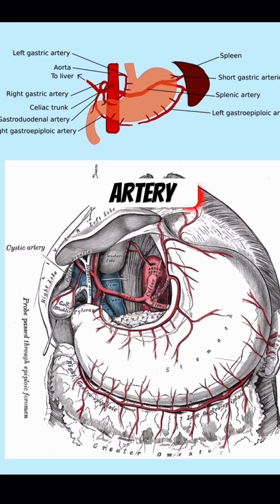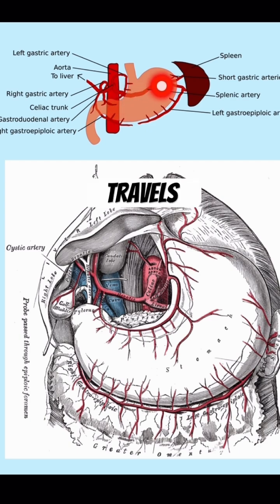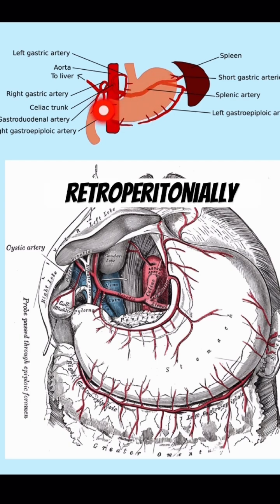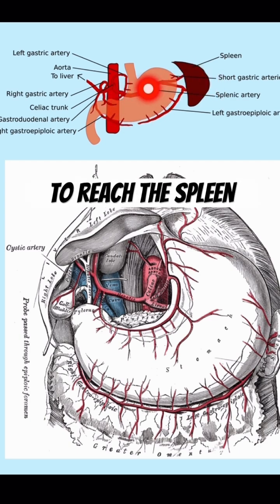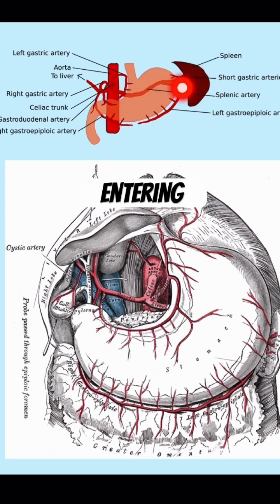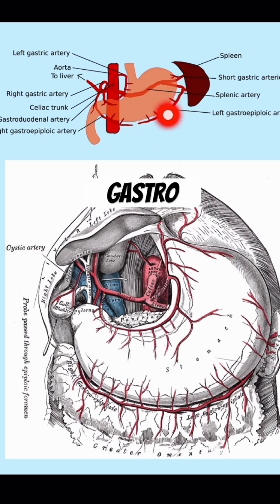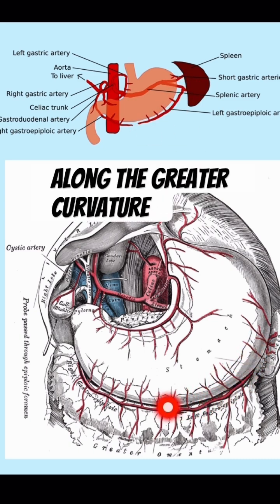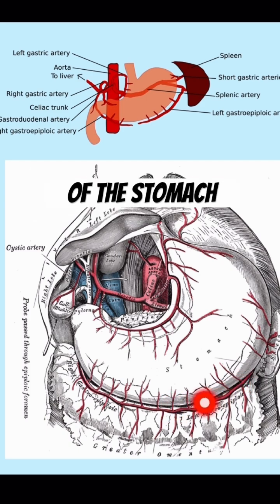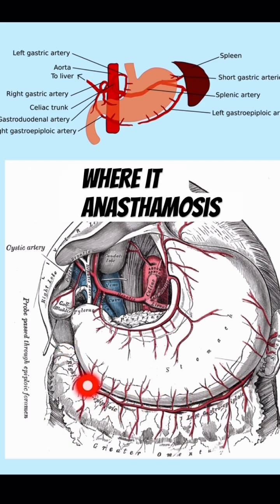This is the splenic artery, which travels retroperitoneally along the pancreas to reach the spleen. Before entering the spleen, it gives the left gastroepiploic artery, which runs along the greater curvature of the stomach where it anastomoses with the right gastroepiploic artery.